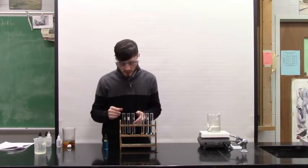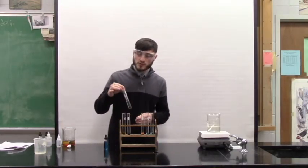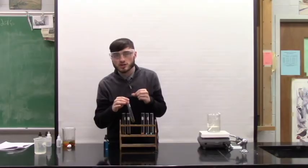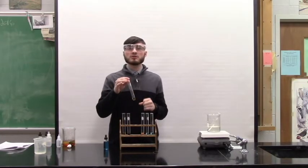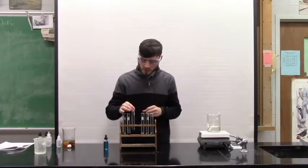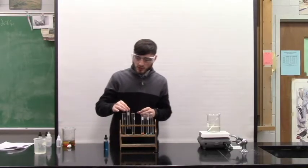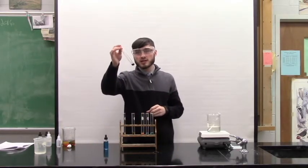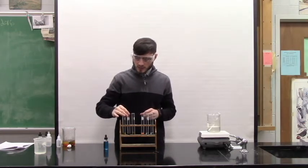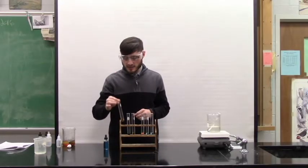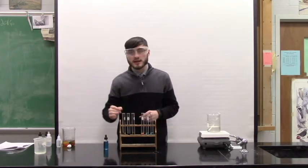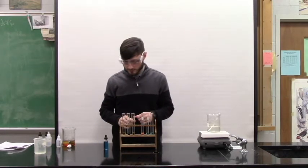For the second set of test tubes, we have our distilled water. We put in our starch indicator solution. That starch indicator solution stays amber, stays that brownish color when we put it in distilled water. Then we put it in the starch, it turns this black color. And then when we put it into our glucose, it stays that brown or that amber color.